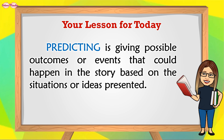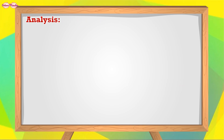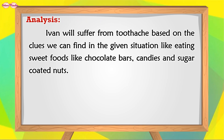Predicting is giving possible outcomes or events that could happen in the story based on the situations or ideas presented. Ivan will suffer from toothache based on the clues we can find in the given situation, like eating sweet foods like chocolate bars, candies, and sugar-coated nuts.